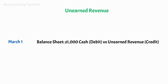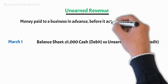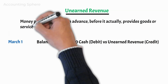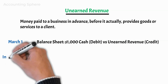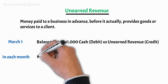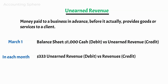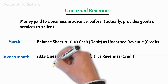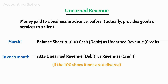Unearned revenue is the money paid to a business in advance, before it actually provides goods or services to a client. As each month passes and the 100 shoe items are delivered, Shoes On will earn $333, which is $1,000 divided by three months, and as a result, $333 will be transferred each month from unearned revenue to revenues.